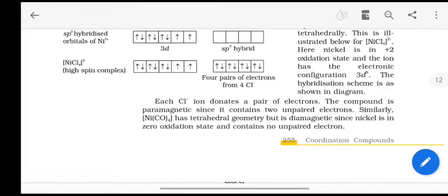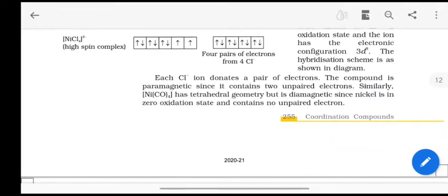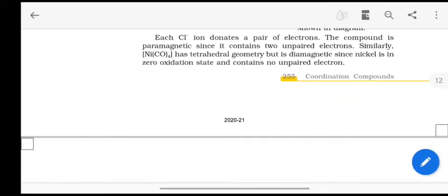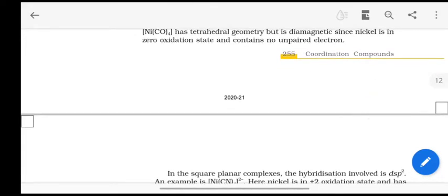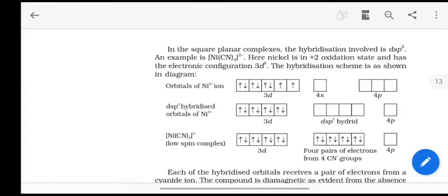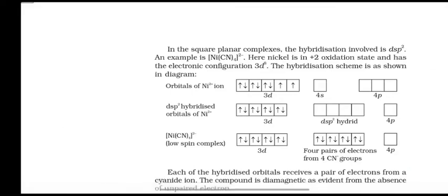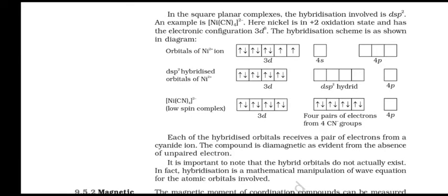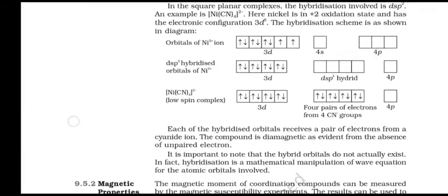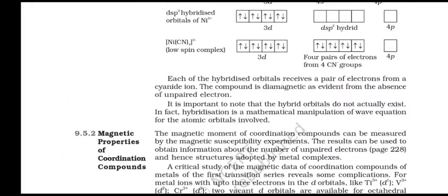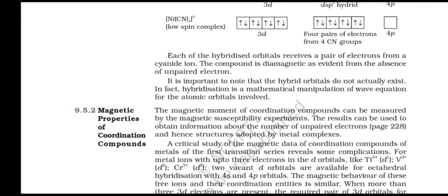In tetrahedral complexes, 1s and 3p orbitals are hybridized to form equivalent orbitals oriented tetrahedrally. For [NiCl4]2-, nickel is in the +2 oxidation state with electronic configuration 3d8. Each Cl- ion donates a pair of electrons. The compound is paramagnetic since it contains two unpaired electrons. NiCO4 has tetrahedral geometry but is diamagnetic since nickel is in zero oxidation state and contains no unpaired electrons. In square planar complexes, the hybridization involved is dsp2. For [Ni(CN)4]2-, nickel is in the +2 oxidation state with configuration 3d8, and each cyanide ion donates a pair of electrons. The compound is diamagnetic as there are no unpaired electrons.